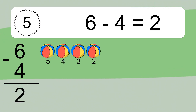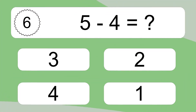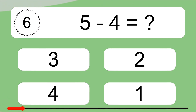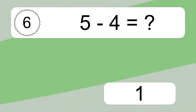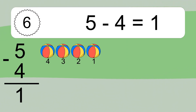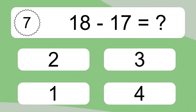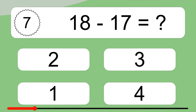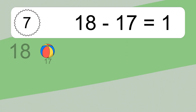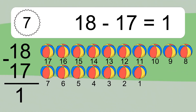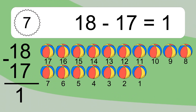6 minus 4 equals what? 6 minus 4 equals 2. Let's count it: 5, 4, 3, 2. 5 minus 4 equals what? 5 minus 4 equals 1. Let's count it: 4, 3, 2, 1. 18 minus 17 equals what? 18 minus 17 equals 1. Let's count it: 17, 16, 15, 14, 13, 12, 11, 10, 9, 8, 7, 6.